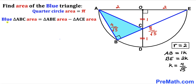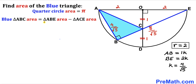Now let's observe that the area of blue right triangle ABC equals the area of triangle ABE minus the area of triangle ACE. So our task now is to calculate both of those areas.